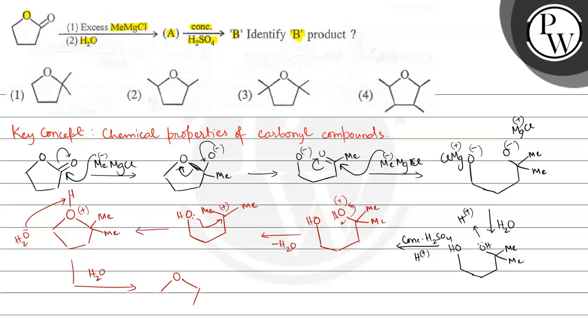We get OH, a five-membered ring, and two methyl groups present here. Methyl and methyl. This is the final product B.